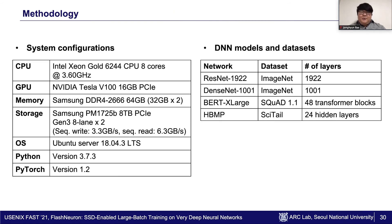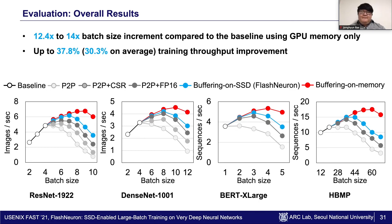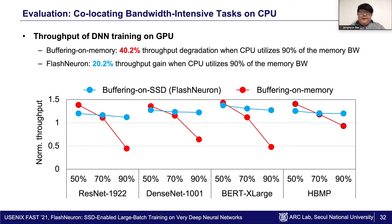We prototype our research on PyTorch and evaluate on an NVIDIA Tesla V100 GPU with 2 NVMe SSDs. We choose four state-of-the-art models and scale them up to represent future DNN models with much deeper layers. As a result, Flash Neuron increases the maximum runnable batch size by a factor of 12.4 to 14 times compared to the vanilla baseline using GPU memory only, and improves training throughput by up to 37.8%. To demonstrate superior performance isolation over the conventional buffering on memory approach, we collocate data augmentation tasks running on CPU with DNN training on GPU. The performance loss of buffering on memory degrades by 40.2% when the CPU workload utilizes 90% of the available memory bandwidth. However, Flash Neuron still achieves 20.2% throughput gains over the baseline.